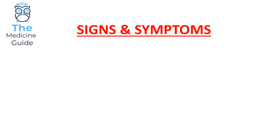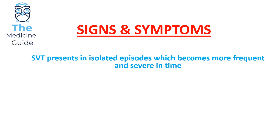Let's focus on the signs and symptoms of an SVT. An important thing to remember about SVT is that episodes often present in a recurrent and paroxysmal manner, and these episodes become more frequent and more severe as time goes by. They have an abrupt onset and abrupt offset.